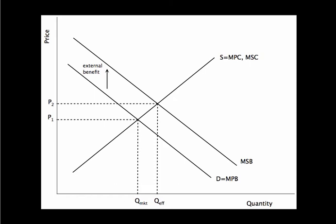With deadweight loss, just be careful about labeling the right area. You're always looking at social costs and social benefits, and if they're not equal where you're currently producing, that's what's creating the deadweight loss. In this case, we're consuming and producing here, but at this point the marginal social benefit is up here and the marginal social cost is here on this curve. So there's this lost surplus by not producing and consuming enough, because there would have been more surplus created. All of these extra units have marginal social benefit above marginal social cost — it would be efficient to keep producing up until that point. Always compare those marginal social benefit and marginal social cost curves to determine what's happening with deadweight loss.